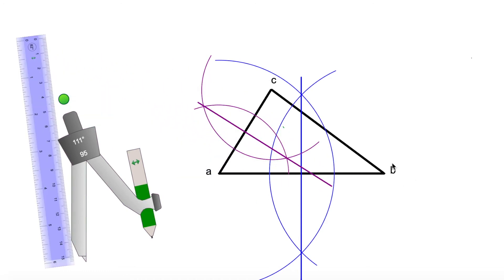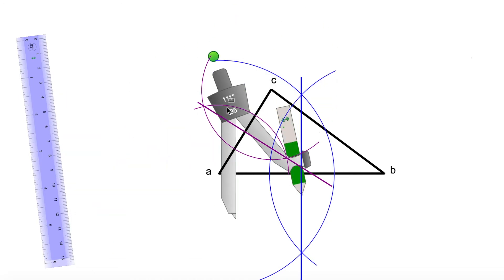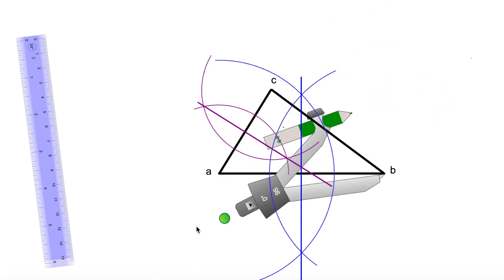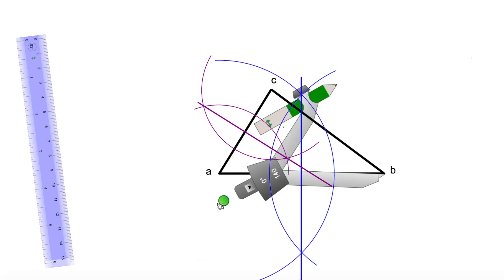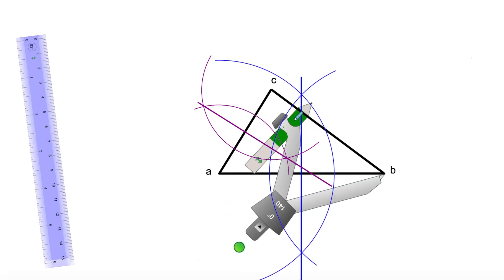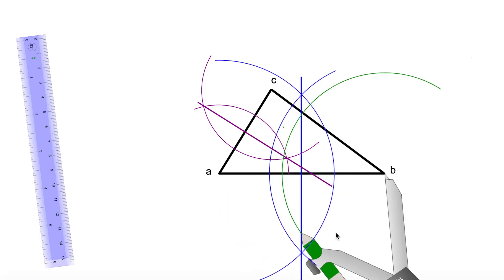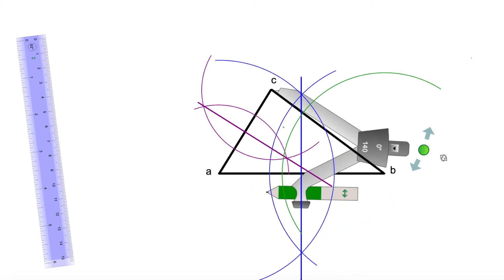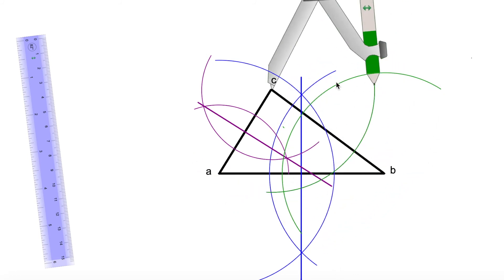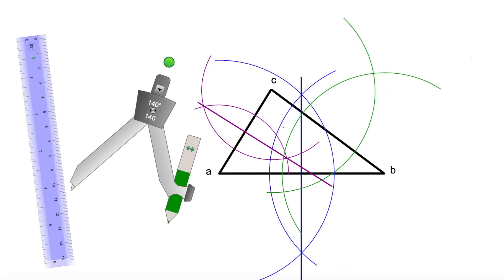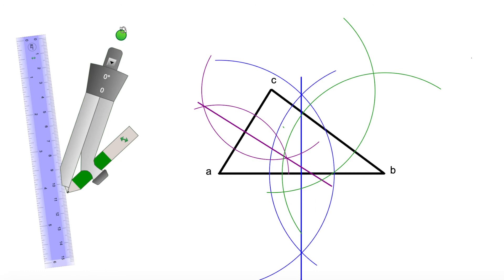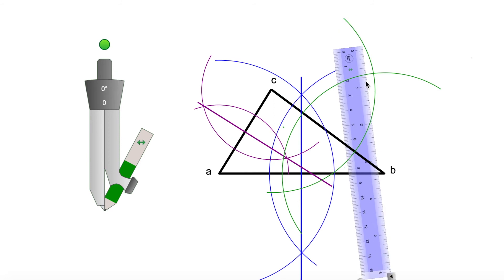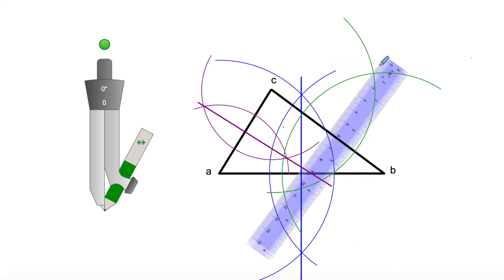Now I'm going to work on segment CB. I grab my compass, open it more than half of that segment — it's a little bit short so I open it a bit more, and now it's perfect. I trace an arc, then move to point C with the same radius and trace another arc. These two arcs have two meeting points, so I grab my ruler and draw a line through them — that is the perpendicular bisector of segment CB.